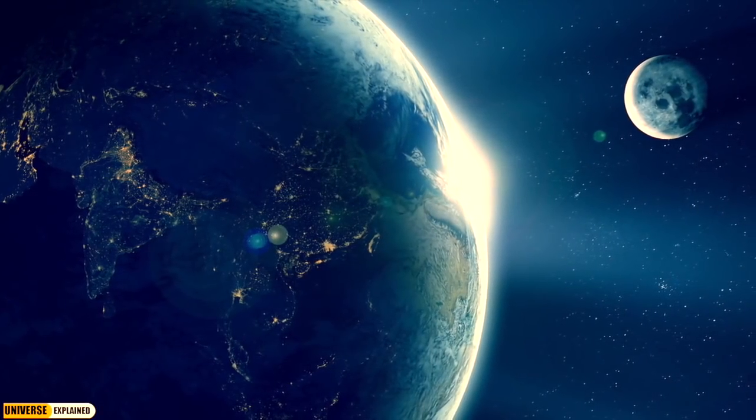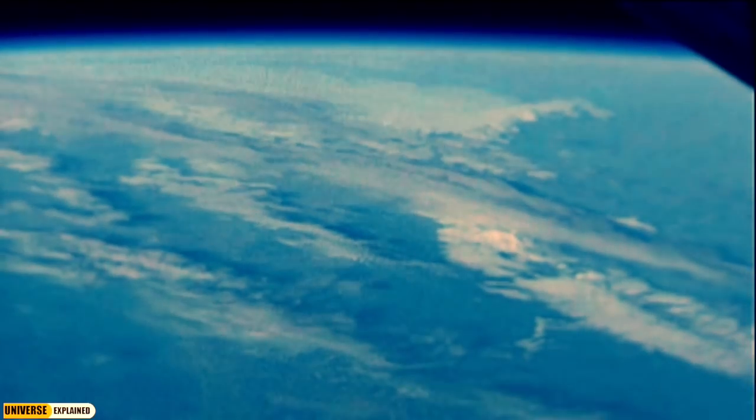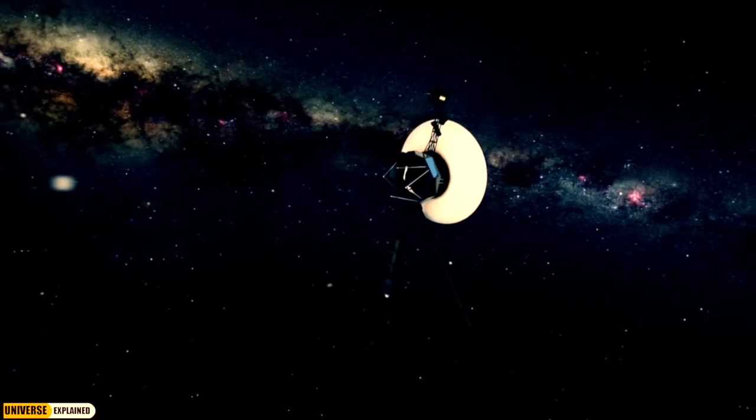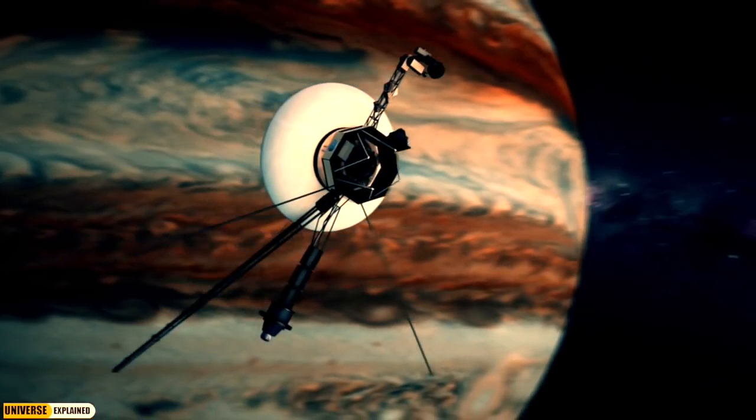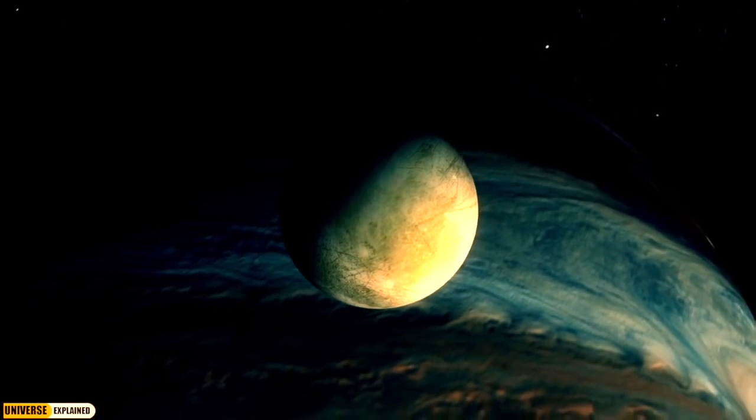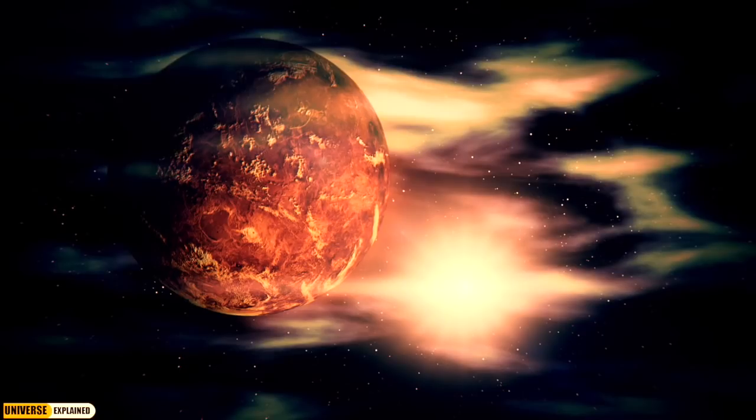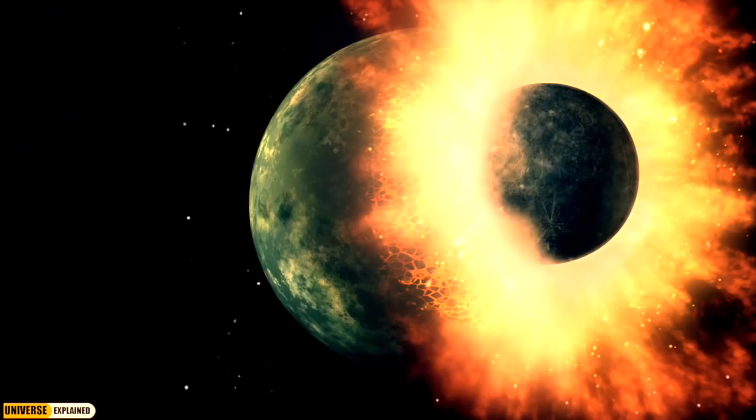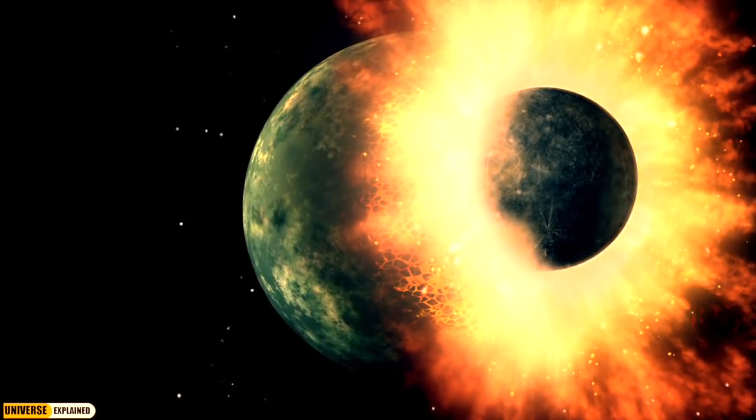We know that all planets orbit the Sun in a counterclockwise direction, and almost all planets spin counterclockwise on their own axis. The only planet that does not spin in the counterclockwise direction is Venus, which is because of a collision that happened billions of years ago.